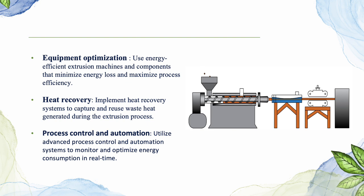Regularly maintain and calibrate equipment to ensure optimal performance. Next, we can do heat recovery, which implements heat recovery systems to capture and reuse waste heat generated during the extrusion process. This can be achieved through heat exchangers or other technologies to preheat incoming materials or water, reducing the need for additional energy. We also plan process control and automation, utilizing advanced systems to monitor and optimize energy consumption in real time. This system can adjust parameters and make energy-saving decisions based on specific conditions.